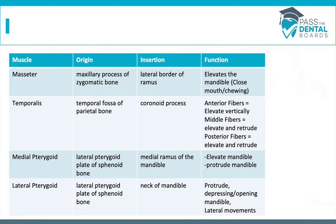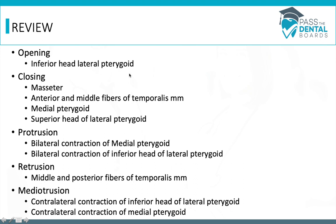Here's a table to quickly review the origin, insertion, and function of the muscles of mastication. Opening is done by the inferior head of the lateral pterygoid. Closing is done by the masseter, the anterior and middle fibers of the temporalis, the medial pterygoid, and the superior head of the lateral pterygoid. Protrusion is done during bilateral contraction of the medial pterygoid and the inferior head of the lateral pterygoid. Retrusion is done by the middle and posterior fibers of the temporalis.